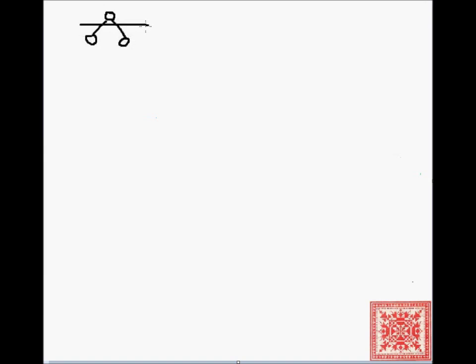A complete binary tree is a binary tree where all of the possible positions on each level are filled with nodes. Here's a complete binary tree with two levels. On level 0 we have one node, on level 1 we have two nodes, and they all exist. In general, if you have a complete binary tree, the number of nodes on level L is 2 to the power of L.